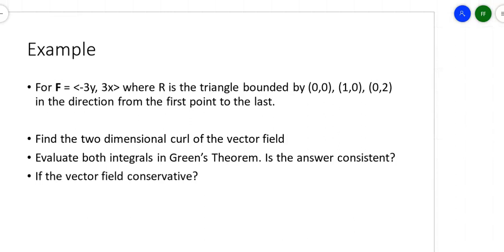Let's take a look at this in two different ways. I've got some vector field of negative 3Y, 3X, except this time the region on the bottom is bounded by three points, which means it's a triangle, and it specifically went in the direction from the first point to the last. So it's a closed curve, and I can set it up in parametric form if I want, and I could even evaluate it as a double integral.